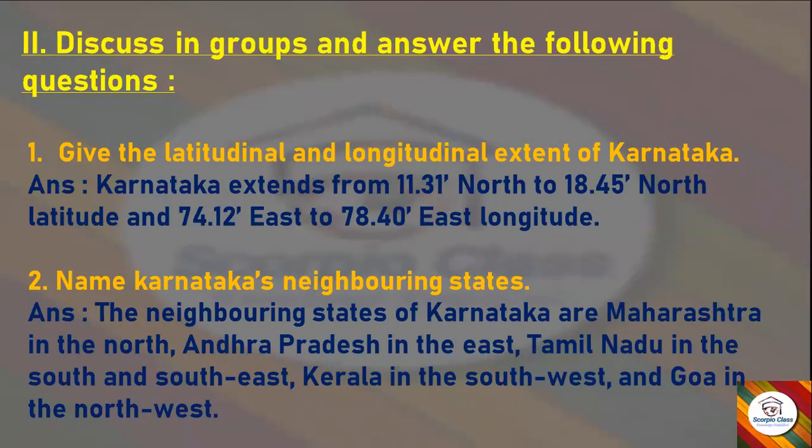Second main section: Discuss in group and answer the following questions as per your textbook. First question: Give the latitudinal and longitudinal extent of Karnataka. Answer: Karnataka extends from 11.31 degrees North to 18.45 degrees North latitude, and 74.12 degrees East to 78.40 degrees East longitude.